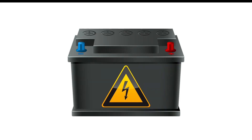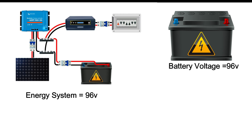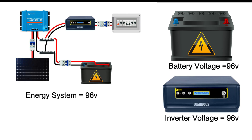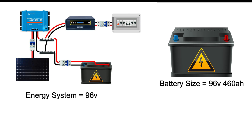Let's move on to figure out our battery size in ampere hours. For a battery the size we're considering, we will go for at least a 96-volt energy system, which means we need a 96-volt battery and a 96-volt inverter since the battery voltage must match the inverter voltage. We divide the battery capacity of 43,333 watts by 96 volts to get 451 ampere hours. Since you can't get exactly 451 Ah, you need a 96-volt, 460 ampere-hour battery to power the load on our table for the given hours and days of autonomy.